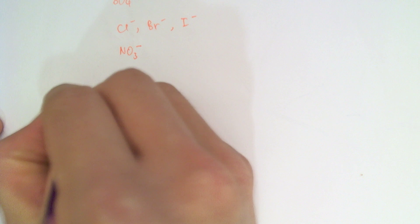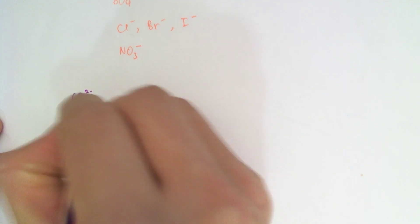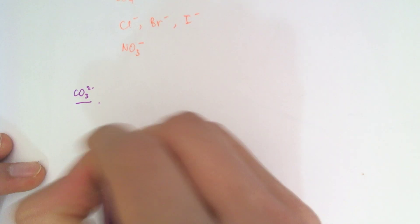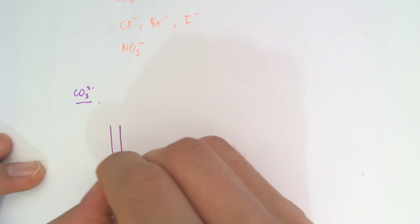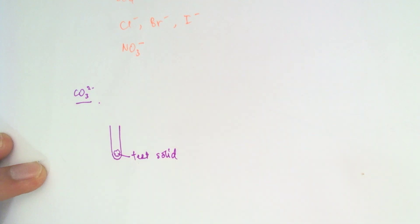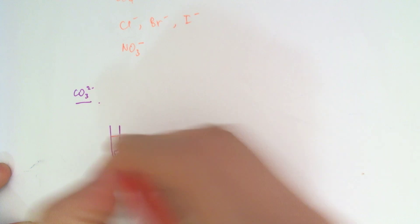Most carbonates are insoluble except for the group 1 carbonates and ammonium carbonates. So carbonates typically are going to come in the form of solid. I'm going to put that solid carbonate in here that I want to test.